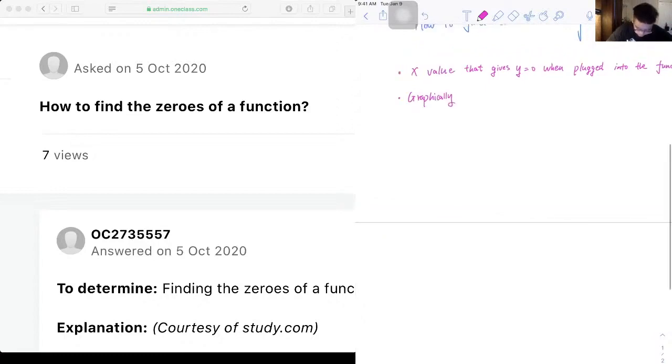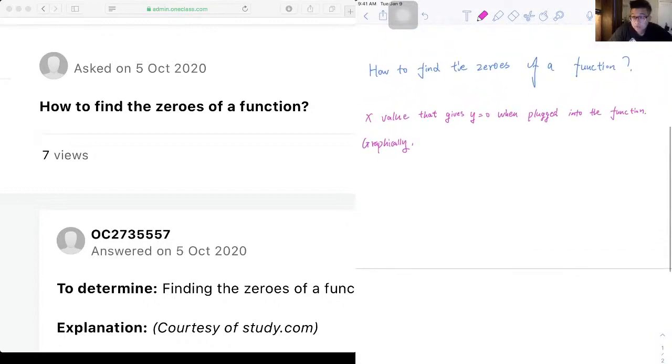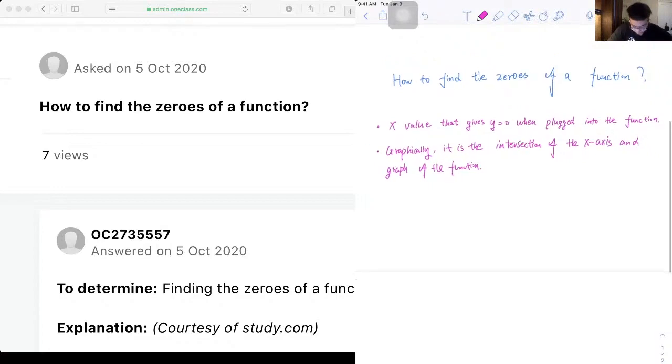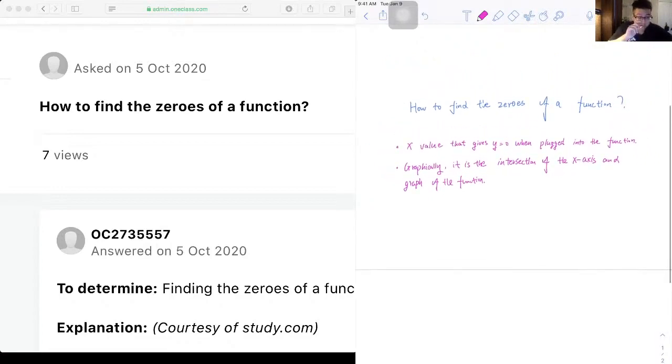And graphically, it is the intersection of the x-axis and the graph of the function. So those are the basic definitions of what zeros are.